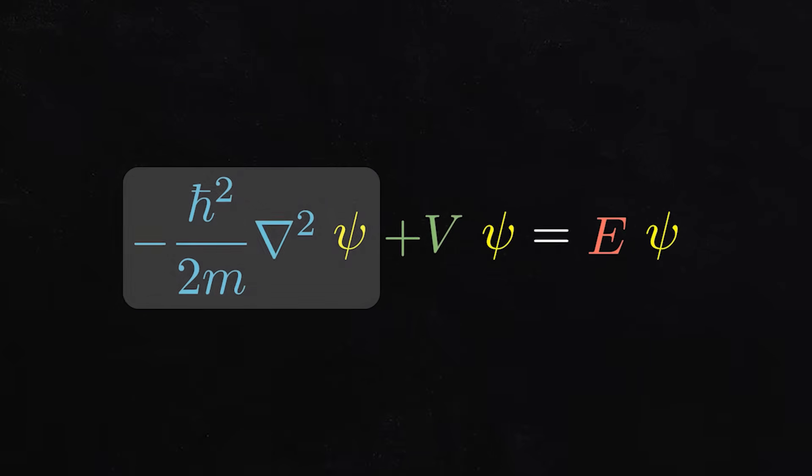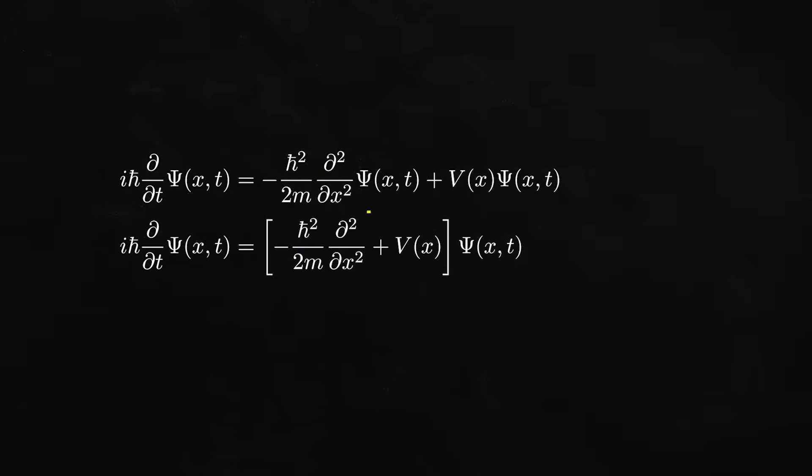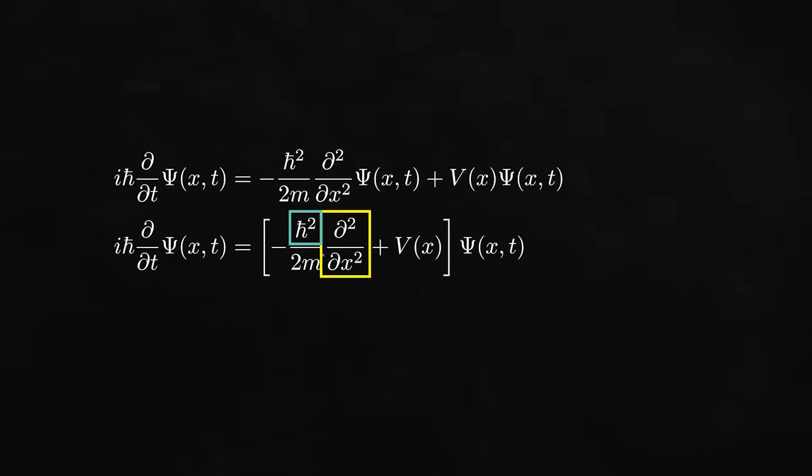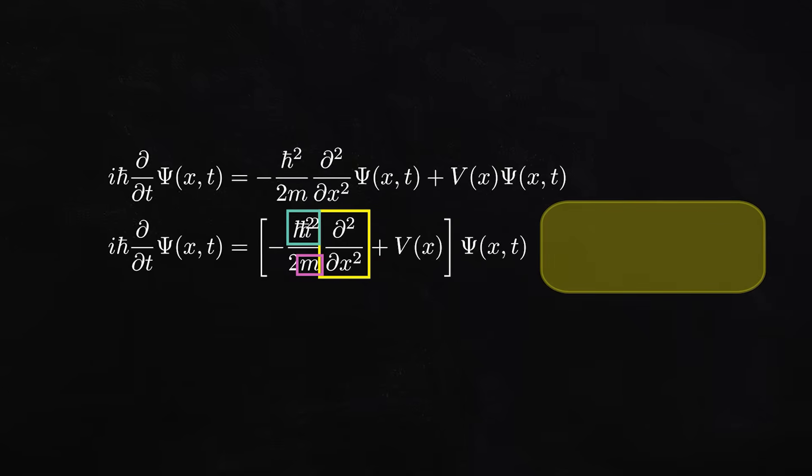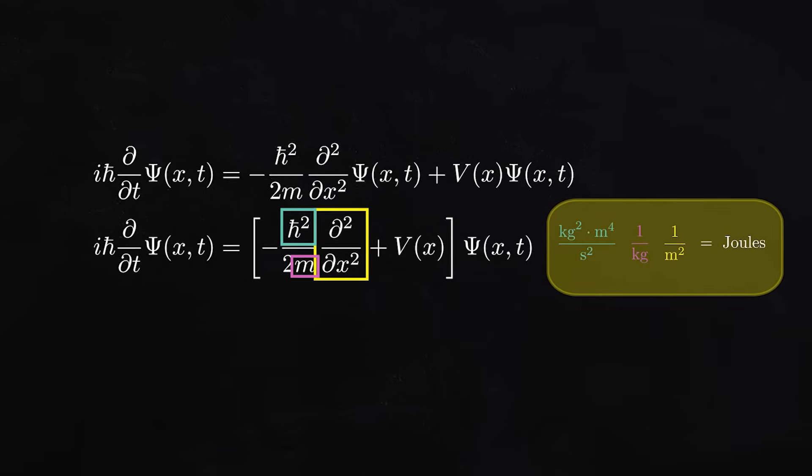The first term in the Schrodinger equation is a few constants multiplying a second derivative. The next term in the Schrodinger equation is some function v of x, which represents the potential energy in the system. Psi of x, for both terms, is the wavefunction. For now, let's factor out the wavefunction, which has to be to the right now since we have operators like the derivative acting on our wave function. And let's look at each term individually. Here we have this first term, with the second derivative with respect to position.